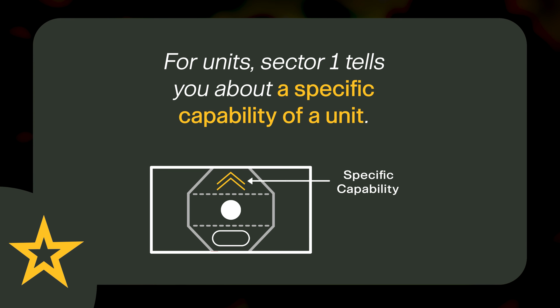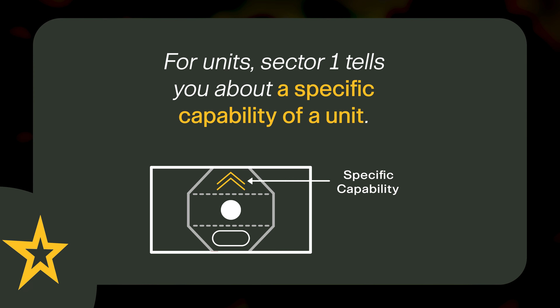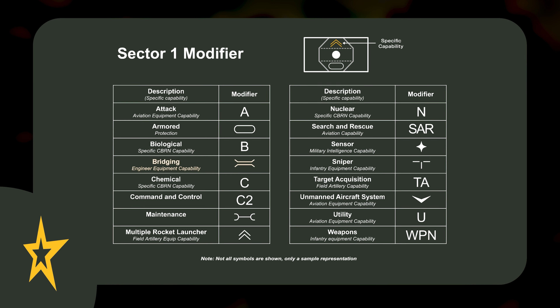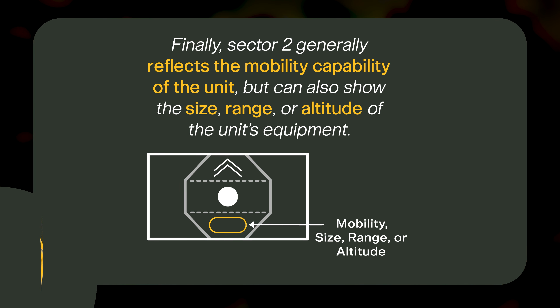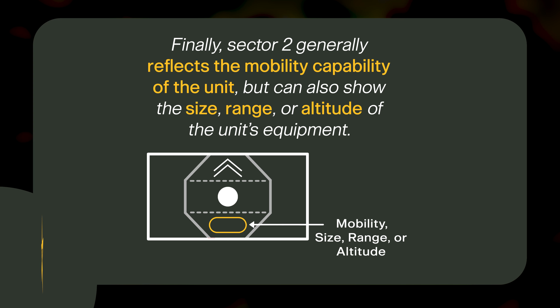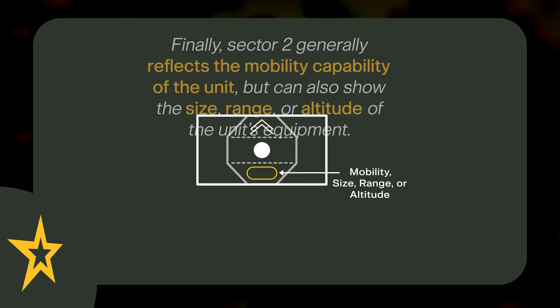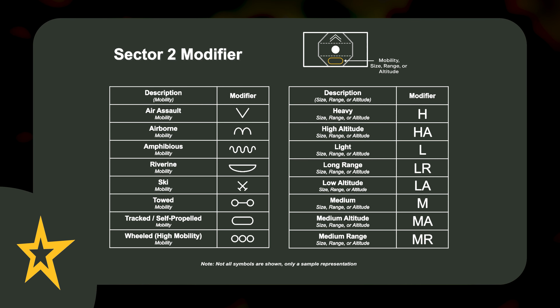For units, sector 1 tells you about a specific capability of a unit. Examples include bridging, maintenance, or multiple rocket launcher. Finally, sector 2 generally reflects the mobility capability of the unit, but can also show the size, range, or altitude of the unit's equipment. Examples of these include air assault, airborne, or tractor self-propelled.